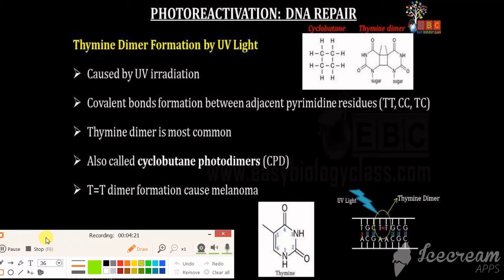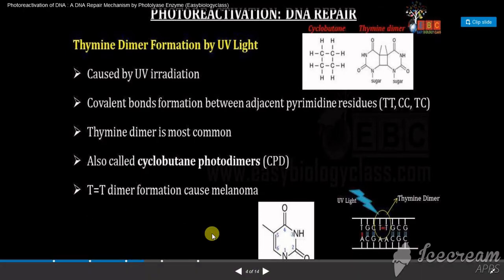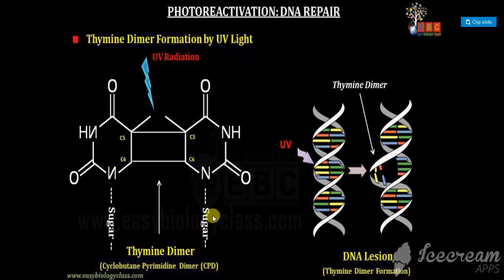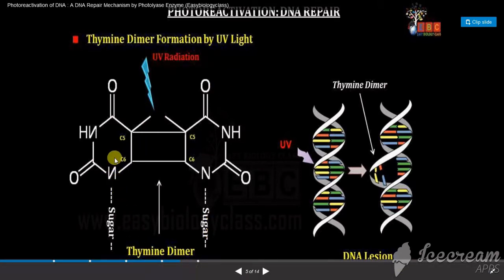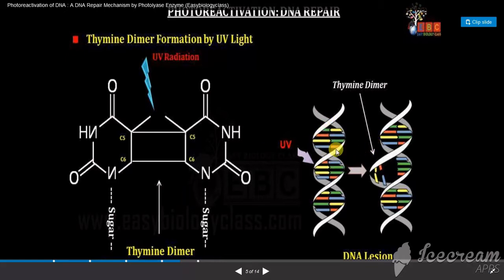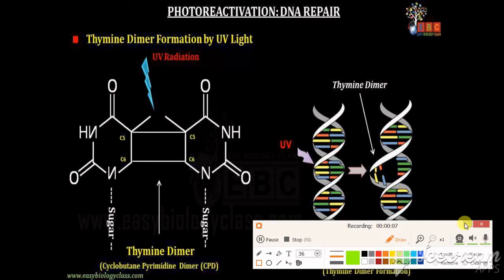Looking at the diagram: these are the thymine-thymine nucleotides present in the DNA molecule. When ultraviolet radiation is incident on these thymine molecules, it results in the formation of thymine-thymine dimers. The DNA molecule gets exposed to ultraviolet light and this causes the formation of thymine-thymine dimers — this is the DNA lesion caused by UV.